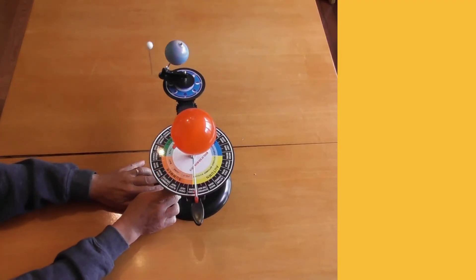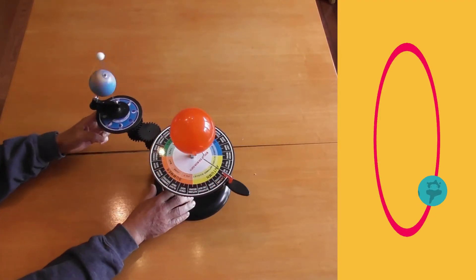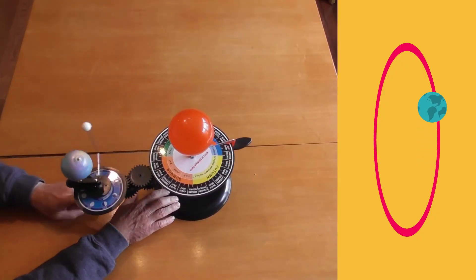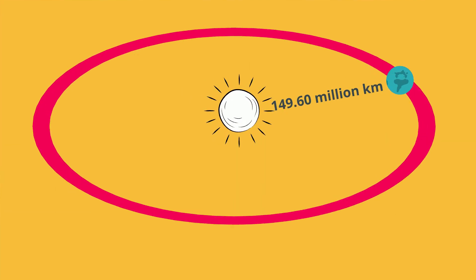However, the Earth's orbit is an ellipse, and the Earth has an average distance from the Sun of 149.60 million kilometers, or roughly 93 million miles from the Sun.